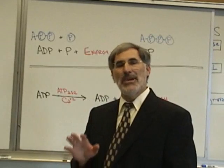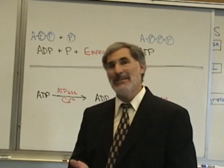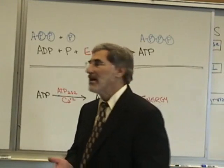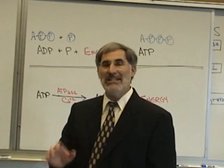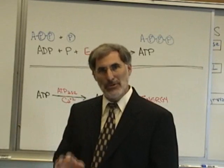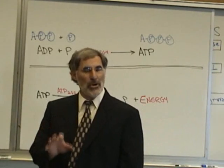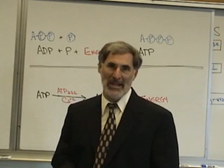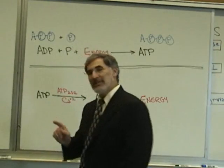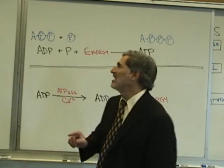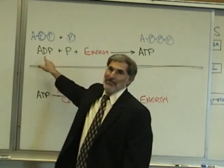How is ATP produced? Where does the cell get ATP from? You don't get it in your food directly. ATP must be produced within a cell through a process called cellular respiration. In order for a cell to produce ATP, it uses ADP.